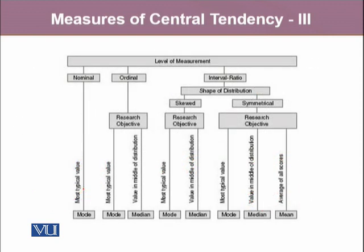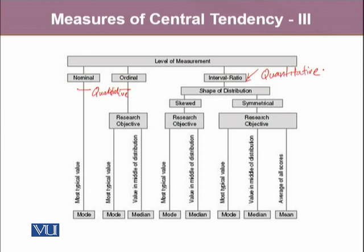But the appropriateness of these measures of central tendency also depends upon the type of variable we are dealing with. Since we know that there are two major types of variable — qualitative and quantitative — qualitative variables can be nominal or ordinal, while quantitative variables are measured on interval or ratio scale. If the variable is a categorical variable measured on a nominal scale, the best measure of central tendency would be mode. For a qualitative variable measured on an ordinal scale, the best measure is also mode, but we can also calculate median since we are dealing with an ordered array.